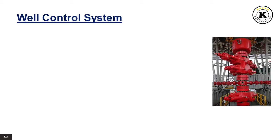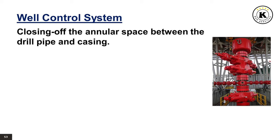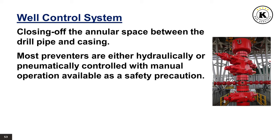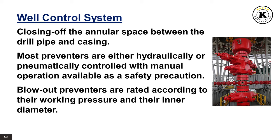Well Control System. The well control system, or blowout prevention system, prevents the uncontrolled, catastrophic release of high-pressure fluids — oil, gas, or salt water — from subsurface formations. The main function of the blowout preventers is to close off the annular space between the drill pipe and casing. Most preventers are hydraulically or pneumatically controlled with manual operation available as a safety precaution. Blowout preventers are rated according to their working pressure and inner diameter.